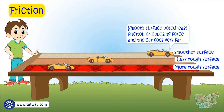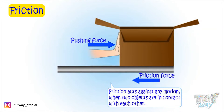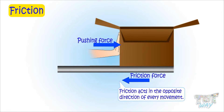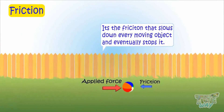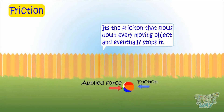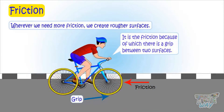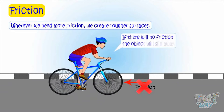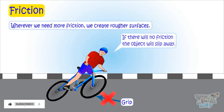The point you need to remember is: friction acts against any motion when two objects are in contact with each other, and friction acts in the opposite direction of every movement. It is friction that slows down every movement and eventually stops it. And it is friction because of which there is a grip between two surfaces. If there were no friction, things would just slip away — there would not be any grip between two objects.